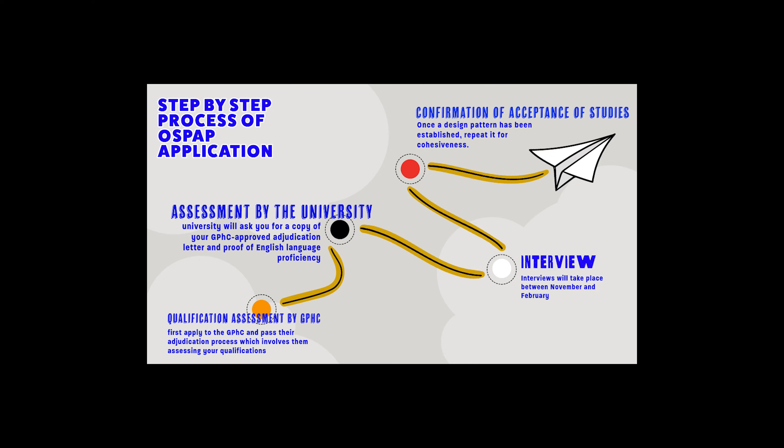If you are successful in the interview, you will be sent an updated unconditional offer letter. Any additional conditions must be satisfied within the given time, or you risk losing your seat. Once all conditions are met, the university will send you a CAS — Confirmation of Acceptance for Studies — usually around end of March or start of April, after which you apply for a UK student visa.